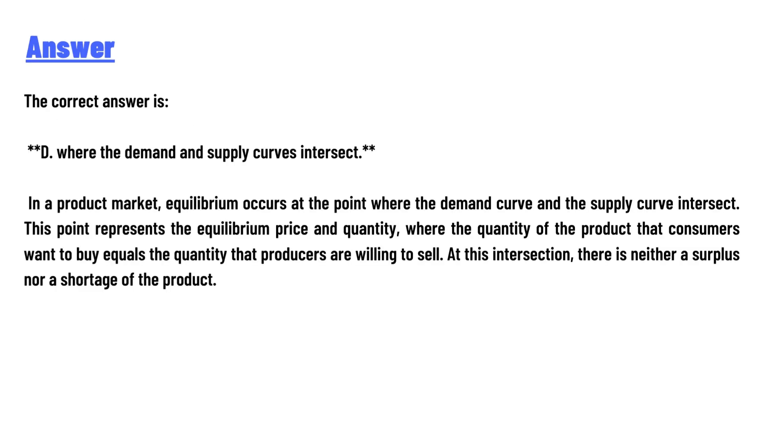The correct answer is D, where the demand and supply curves intersect. In a product market, equilibrium occurs at the point where the demand curve and the supply curve intersect. This point represents the equilibrium price and quantity.